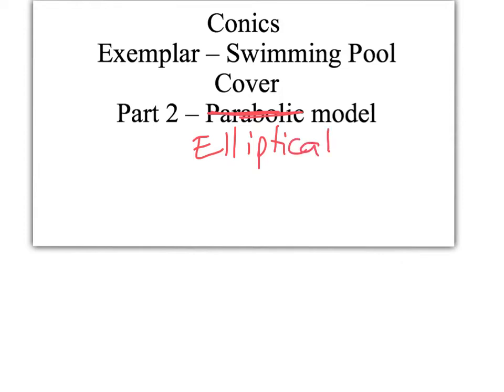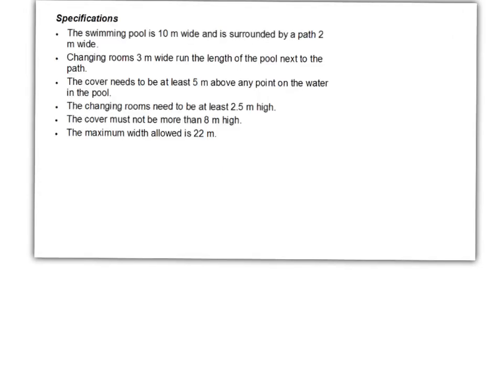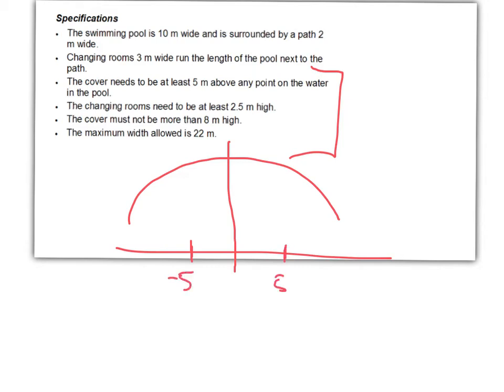So this one should feel a little bit easier. We've got the same specifications as in the first one. We are designing a swimming pool cover, and it needs to fit these conditions. The cover has got to be at least 5 metres above any point on the water in the pool. And the pool goes between negative 5 and 5 metres. We have a path next to the pool, and then we have changing rooms that are 3 metres wide. The cover of the pool can't be more than 8 metres high, and the maximum width is 22 metres.